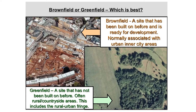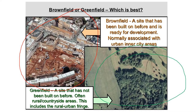When it comes to redevelopment and building, we can either build on brownfield land — as shown by this photo here — or we can build on greenfield land — as shown by this photo here. Brownfield land is a site that has already been built on, just like Trent Basin, and it's ready for new development. It's normally associated with urban inner-city areas. Greenfield land is a site that has not been built on — fresh countryside — often found on the very edge of the city.